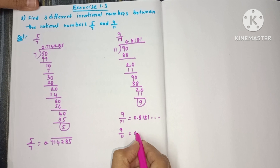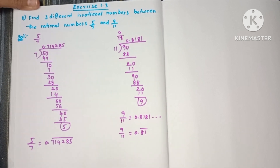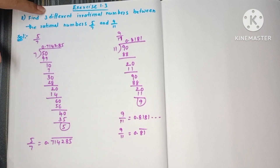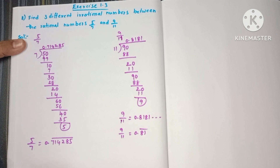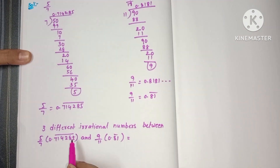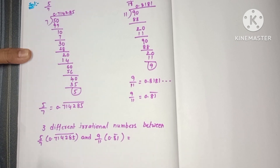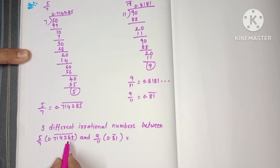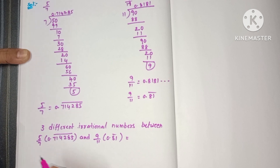So 9 by 11 equals 0.81 bar. Now we have the two numbers in decimal form: 5 by 7 is 0.714285 repeating and 9 by 11 is 0.81 bar. We need to find three different rational numbers between these two decimal values.